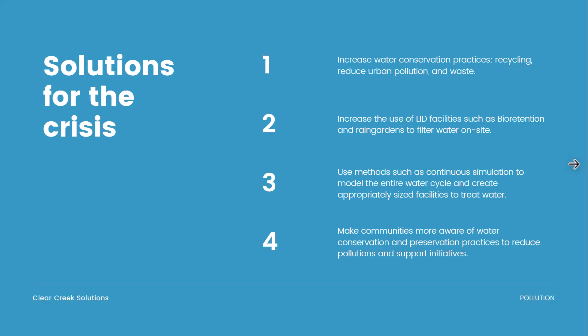So what are some more solutions for the crisis? One would be increased water conservation practices, including water recycling, reduced urban pollution, and overall reduced water waste. Two is to increase the use of LID facilities such as bioretention and rain gardens to filter the water on site. Three is to use methods such as continuous simulation hydrology to model the entire water cycle and create appropriately sized facilities. And four, make communities more aware of water conservation and preservation practices to reduce pollution and support initiatives.